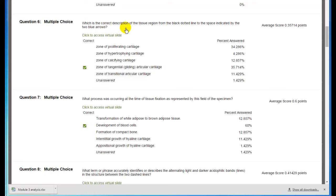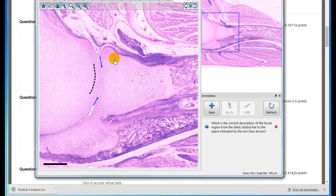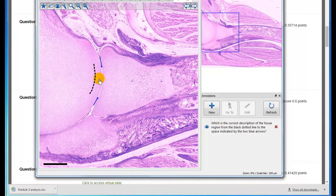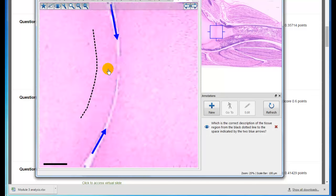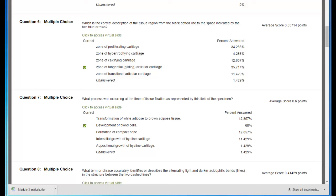Question number six: which is the correct description of the tissue region from the black dotted line to the space indicated by the two blue arrows? The correct answer was zoned tangential gliding articular cartilage because it was the articulating surface between two bones. This is what the specimen looked like. You can see the epiphysis of this bone, the epiphysis of this bone, and we're asking about this area here. If you review the lecture on cartilage, you will see this is the area of the tangential or gliding surface part of the hyaline cartilage in this joint. It can't be calcifying cartilage, transitional articular cartilage, hypertrophying, or proliferating cartilage.